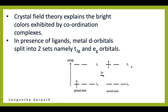According to crystal field theory, the five degenerate d orbitals can be split into two different sets. One set named as t2g consists of three d orbitals which have lower energy, and the other set named as eg has two orbitals of higher energy. This is the case in an octahedral field, whereas in a tetrahedral field it is reverse — the two orbitals forming the e set will have lower energy whereas the three orbitals forming the t2 set will have higher energy.